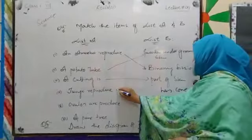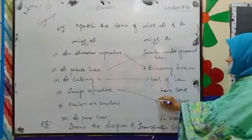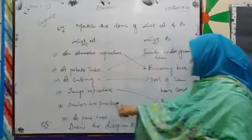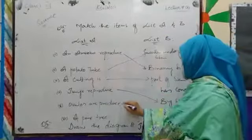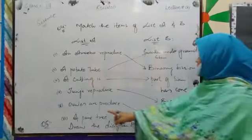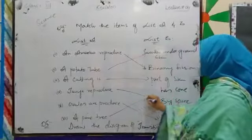Sanjay is produced by spores. Ovules are produced in ovaries. And pine tree has cones.